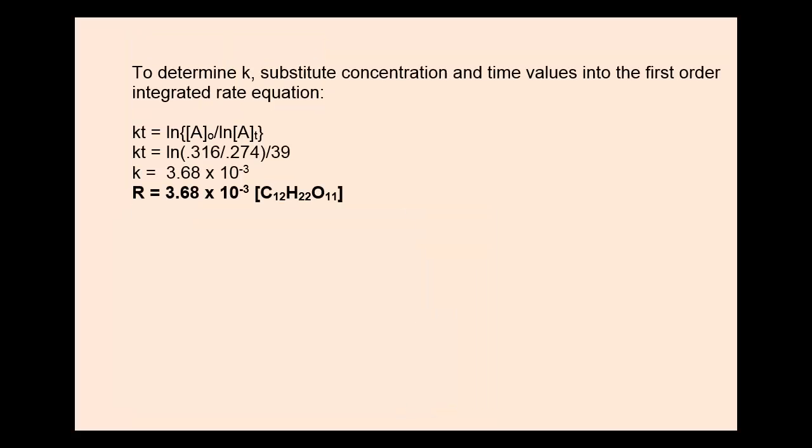To determine the rate constant, we simply substitute concentration and time values into the first order integrated rate equation. Here I chose 0.316 for the initial concentration and 0.274 for the concentration at 39 minutes. And I came up with 3.68 times 10 to the minus third for the rate constant.